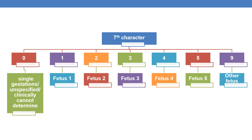To summarize the seventh character values: 0 is for single gestations and multiple gestations when the fetus is unspecified or when it is clinically not possible to determine which fetus is affected. Seventh character 1 is for fetus 1, 2 for fetus 2, 3 for fetus 3, 4 for fetus 4, 5 for fetus 5, and 9 for other fetus.